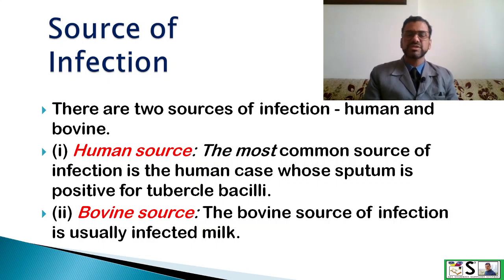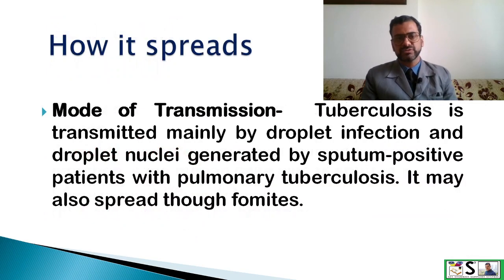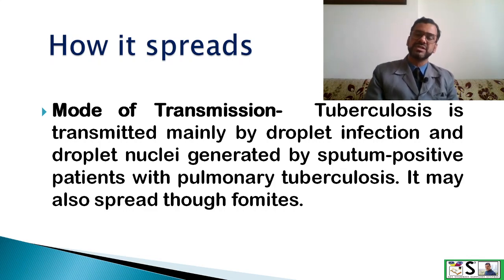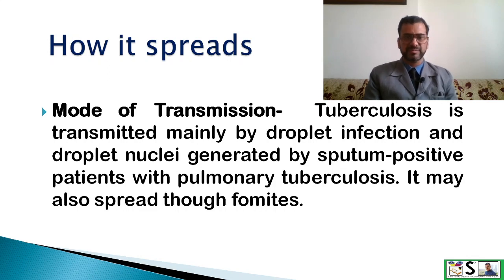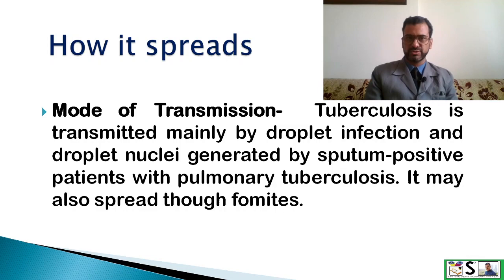The bovine source of infection is usually the milk from an infected animal. Tuberculosis is mainly transmitted by droplet infection and droplet nuclei generated by sputum-positive patients with pulmonary tuberculosis. It may also spread through fomites and infected milk, such as in the case of bovine tuberculosis.